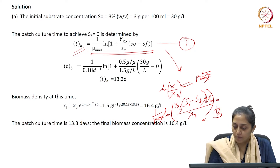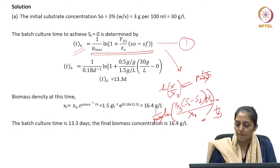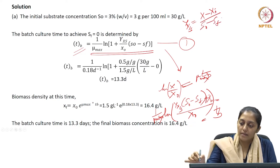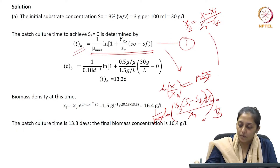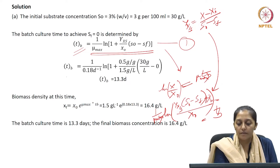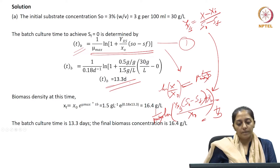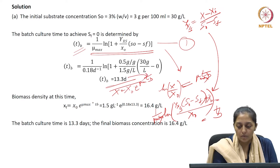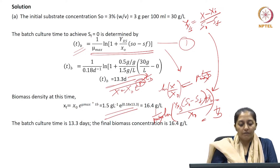X will be X₀ plus Yx/s times (S₀ minus S_f). We know that Yx/s equals (X minus X₀) divided by (S₀ minus S_f) for batch. From here we can find the value of batch time, which comes out to be 13.3 days. And the final biomass concentration is X equals X₀ times e to the power of mu_max times t_b. Knowing t_b, mu_max, and X₀, we can find the final biomass concentration at the end of the batch.